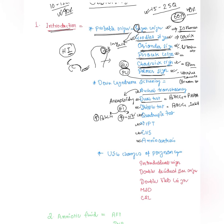Next is Down syndrome screening, also a very important topic. Nuchal Translucency is fluid collection behind the nape, done at 11 to 13 plus 6 weeks. Remember, Nuchal Translucency is not diagnostic for Down syndrome — it is a screening test. If positive, you can proceed to non-invasive prenatal testing or confirmatory testing. Nuchal Translucency is considered positive if found at more than 3 mm.